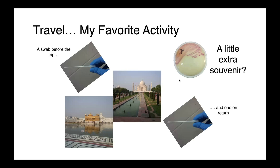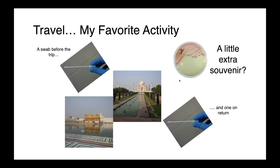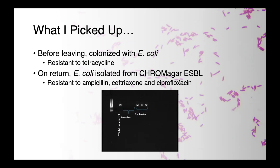When I cultured these swabs, it seemed I came back with a little extra souvenir. Before leaving, I was colonized with E. coli — not surprisingly, most of us are — and this was a fairly wimpy strain, resistant only to tetracycline. On return, I grew an E. coli from ChromagarESBL selective and differential media. It was resistant to ampicillin, ceftriaxone, and ciprofloxacin, which is a classical phenotype associated with CTXM-producing strains. And indeed, when we did the PCR, the pre-travel isolate had no CTXM gene, while the post-travel isolate did — so I picked up one of these organisms during my travels.